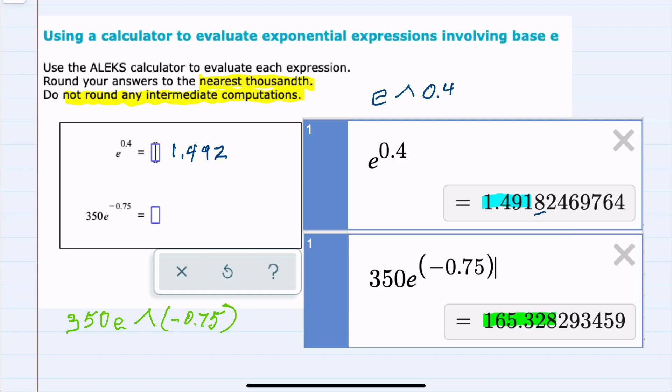Looking to the thousandth place, this time the next digit is a 2, so I will not need to round up. This would be 165.328.